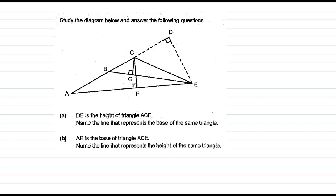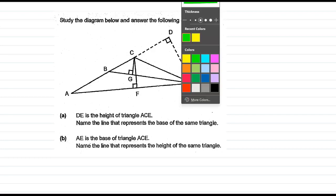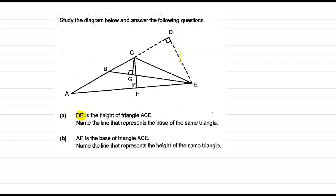Hello everyone, let's solve this problem from area of triangles class 5. We have been asked that DE is the height of triangle ACE. So let's see which is the triangle ACE.